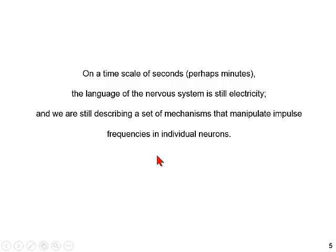On a timescale of seconds and also minutes, we are still talking the language of the nervous system — still talking electricity, still describing mechanisms that ultimately result in manipulating action potential frequencies in individual neurons. But the way we get there from GPCRs is substantially more complex than the way we modulate action potential frequencies using ligand-gated channels.